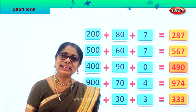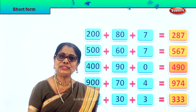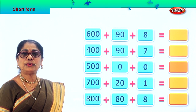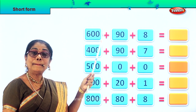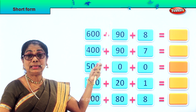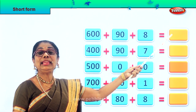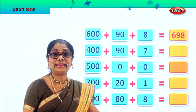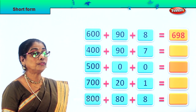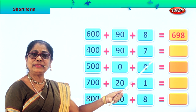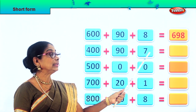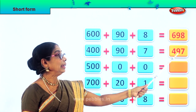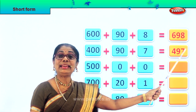Did you enjoy? Shall we take some more sums? We are going to do the short form for 600 plus 90 plus 8. 600 plus 90 plus 8 equal to 698. What is the short form for 400 plus 90 plus 7? 400 plus 90 plus 7 is equal to 497.